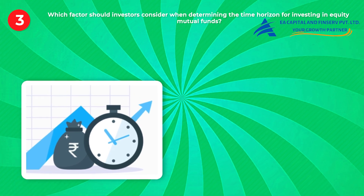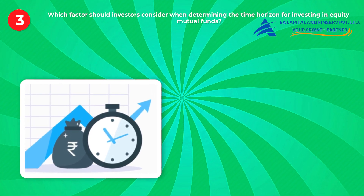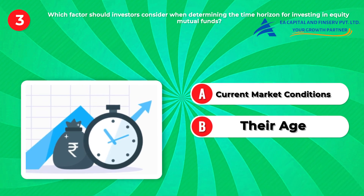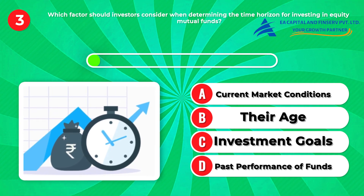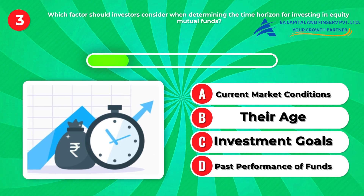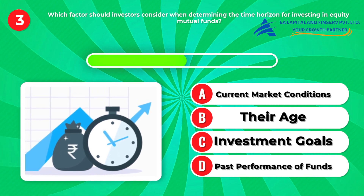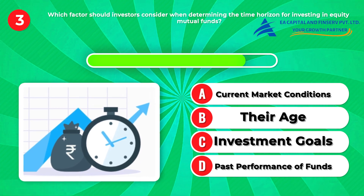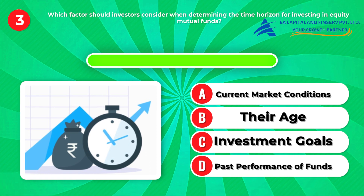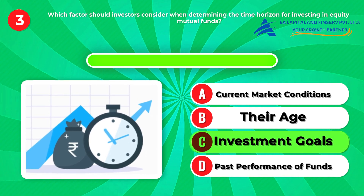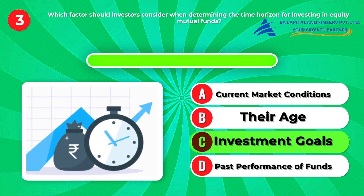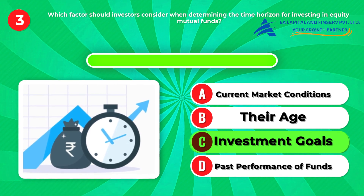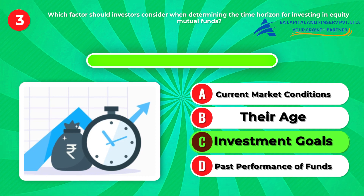Question three: Which factor should investors consider when determining the time horizon for investing in equity mutual funds? A, current market conditions. B, their age. C, investment goals. D, past performance of funds. Answer: C, investment goals. Understanding your investment objectives and time horizon helps in selecting the appropriate equity mutual fund category aligned with your financial goals. Remember, your investment journey should always be guided by your personal aspirations and financial objectives.